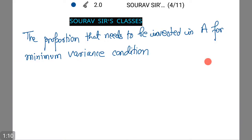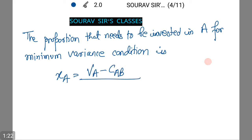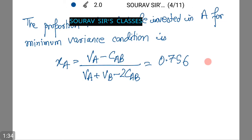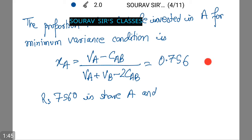The proportion to be invested in A for the minimum variance condition is: XA equals VA minus CAB divided by VA plus VB minus 2CAB, which equals 0.756. This implies rupees 7,560 in share A and the balance of rupees 2,440 in share B.